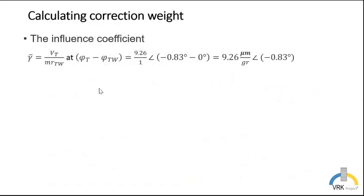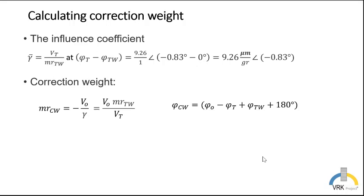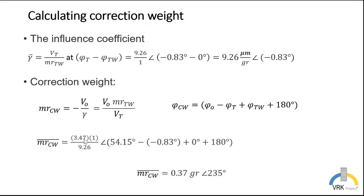The next step is to calculate the correction weight. First, we have to calculate the influence coefficient. This is the equation that we will use. We use the isolated amplitude of the trail weight divided by the mass that we placed as a trail weight. We have 9.26 microns divided by 1 gram, and we subtract both phase angles. To calculate the correction weight, we will have the initial unbalanced amplitude divided by our influence coefficient. This is how we calculate the phase angle for the phase angle for our correction weight. We input our numbers, and we get that the correction weight will be 0.37 grams at 235 degrees.